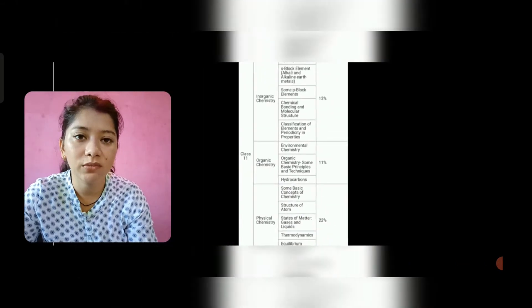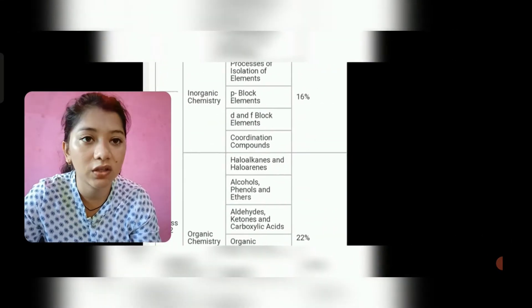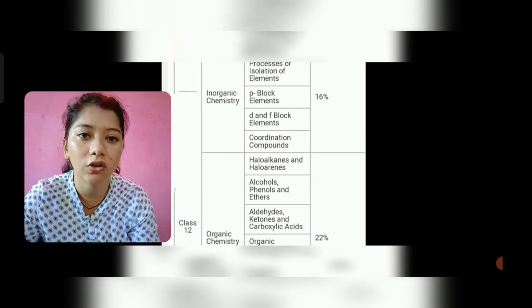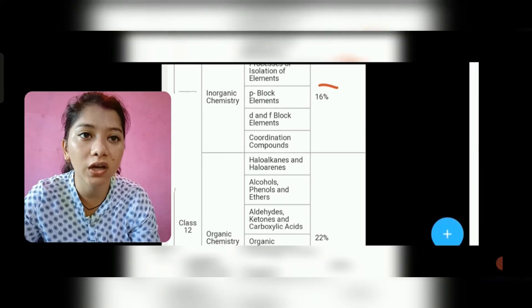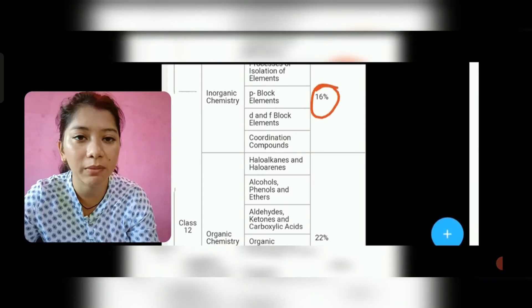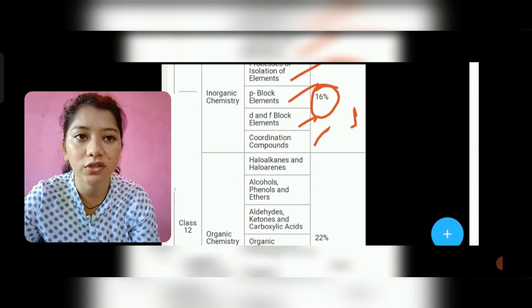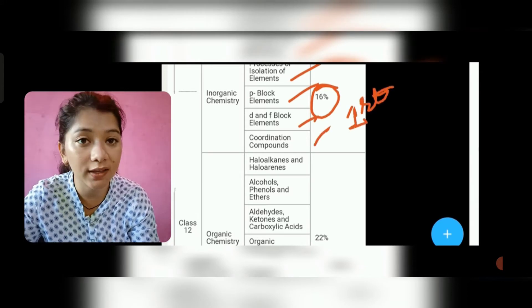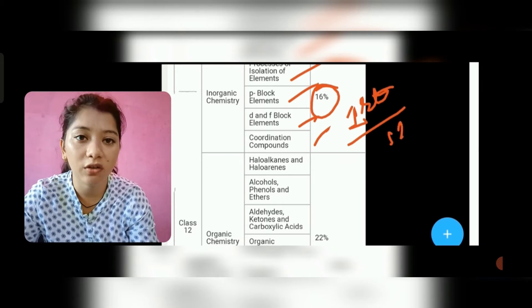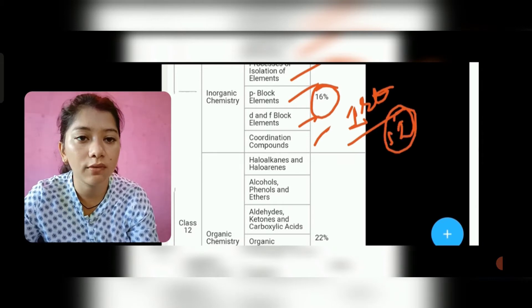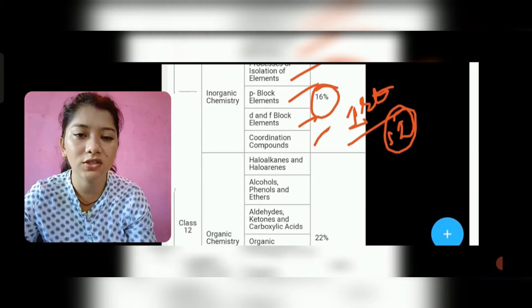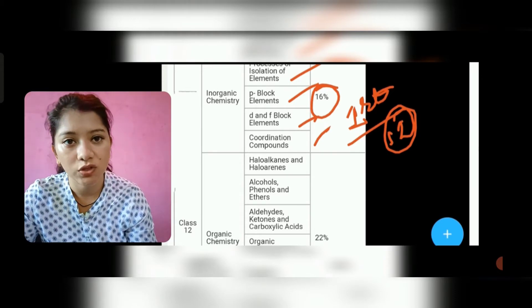If we are watching the 12th level, we will also find the three parts: inorganic, organic, and physical. Inorganic starts from isolation, p-block, d-f-block, coordination. Every time one question comes, two questions. We will also find 2-3 questions. I will tell you how much time we have to give and which chapter will come.